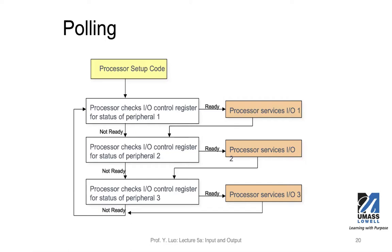We would like the processor to do things other than this — things like data manipulation, computing, logical reasoning, and checking values. All those other things are the main things the processor has to do anyway, in addition to these polling operations. Polling makes sense if these control or status registers are busy very often, because then the checking will not be wasted and won't take much time as part of the loop.